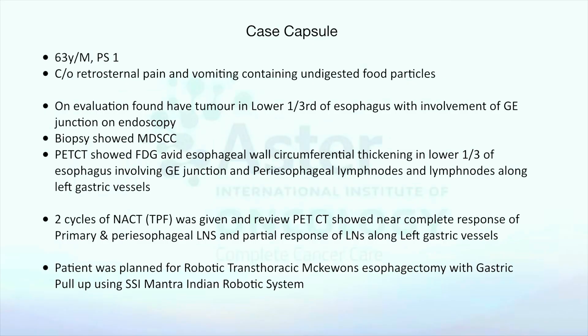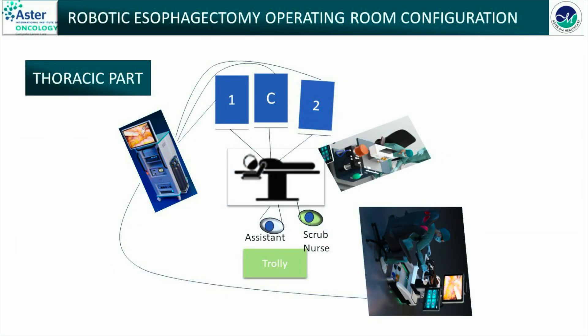Patient was planned for robotic transthoracic McKeown's esophagectomy with gastric pull-up. This is the blueprint of the operating room theater. The patient is positioned in supine position with arms abducted, the robot is docked from the left side, and access is through the right side.